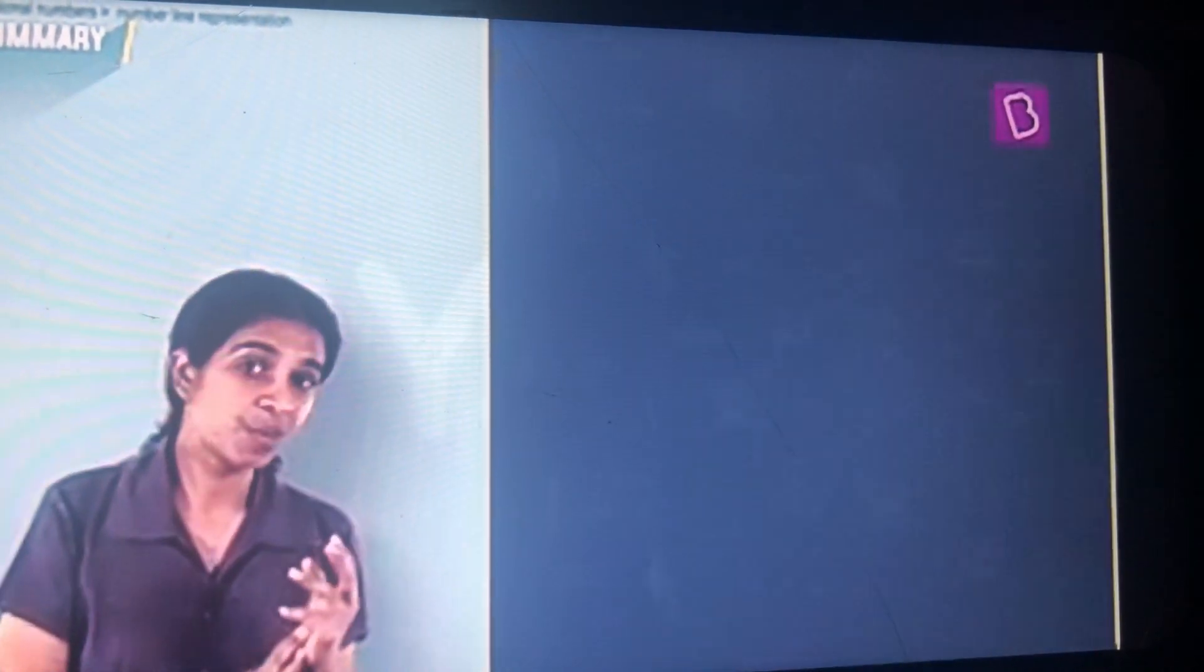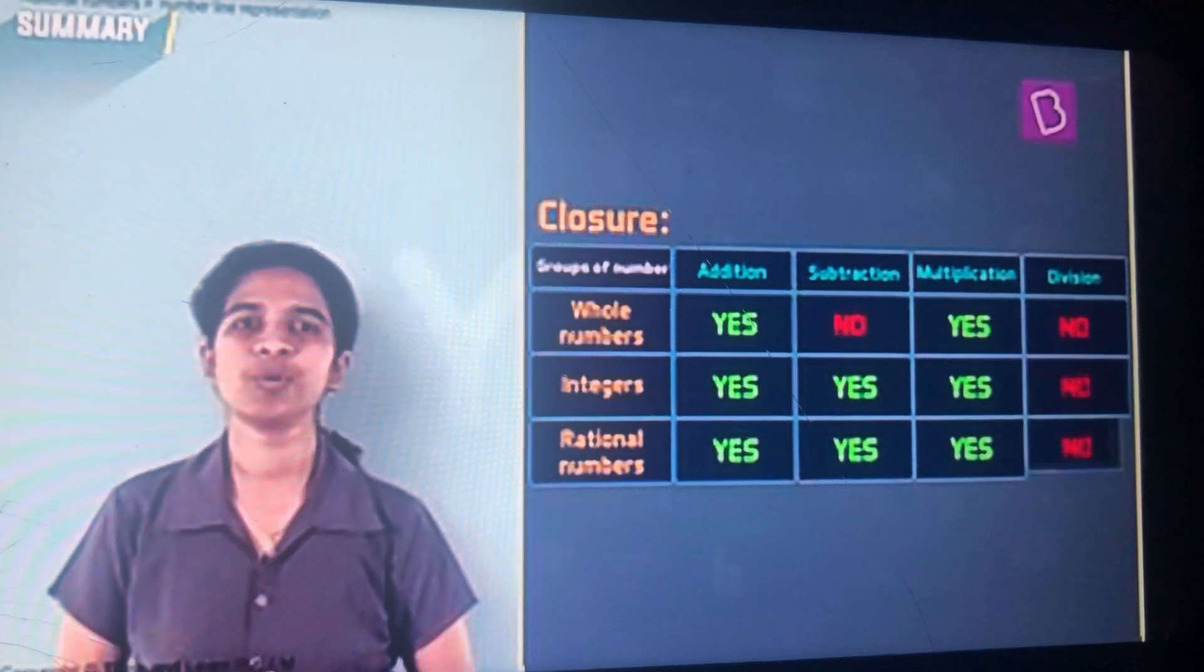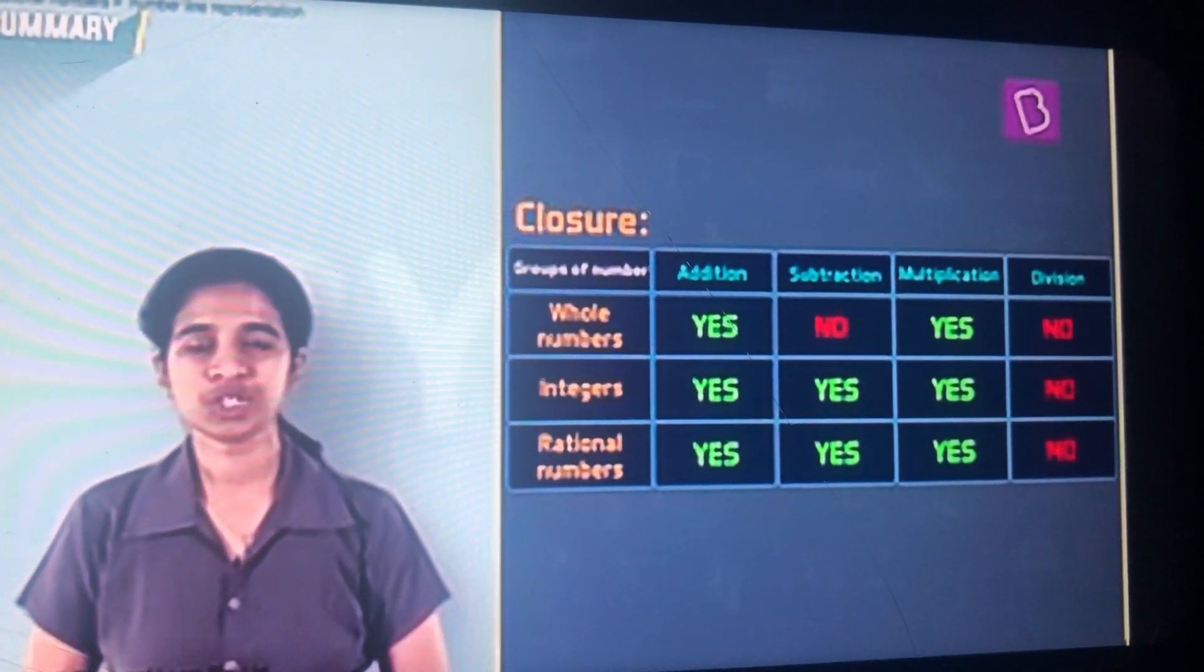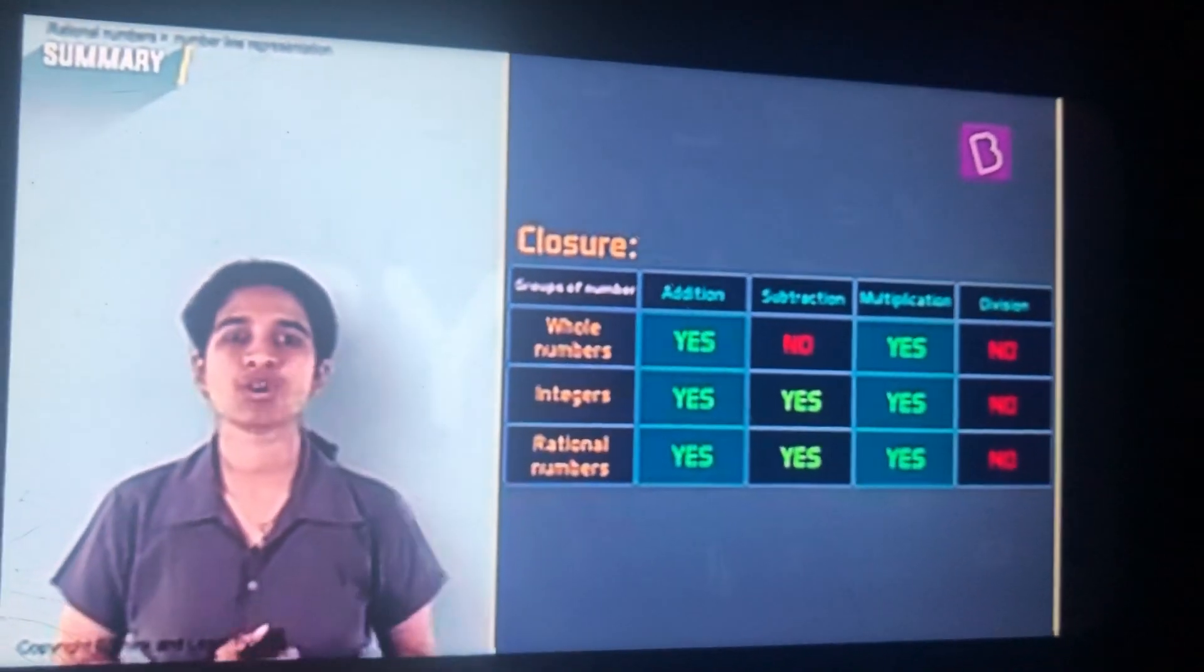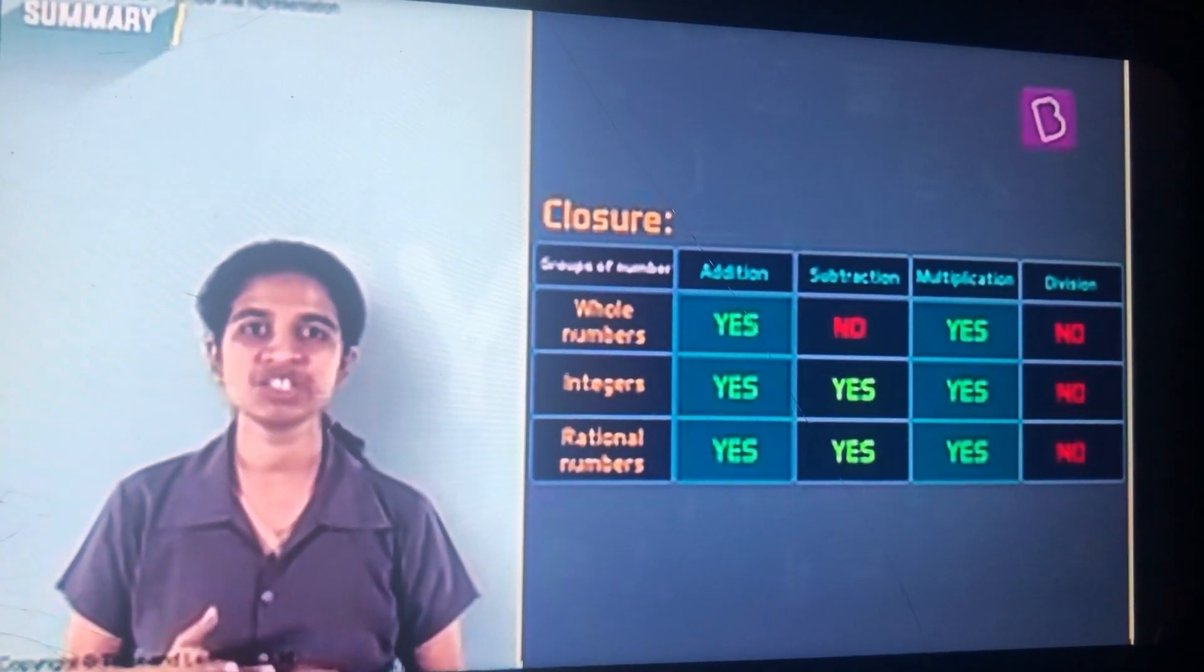The third property, closure, is slightly different based on the group of numbers that you select. So for the closure property, addition and multiplication are always closed, be it whole numbers, integers, or rational numbers.